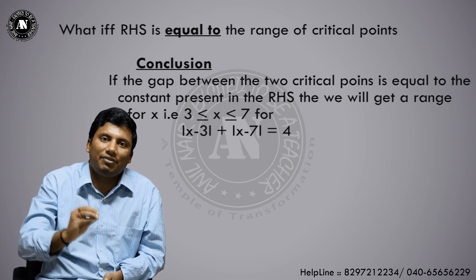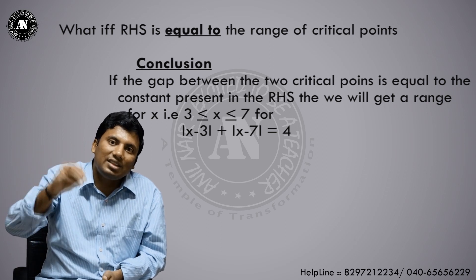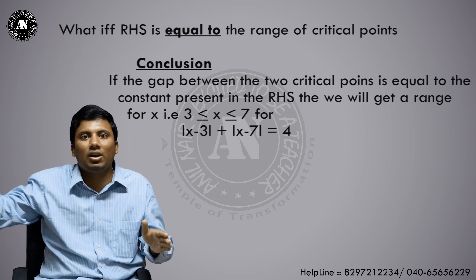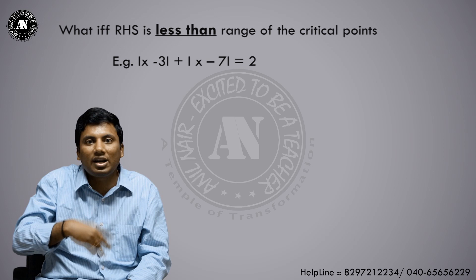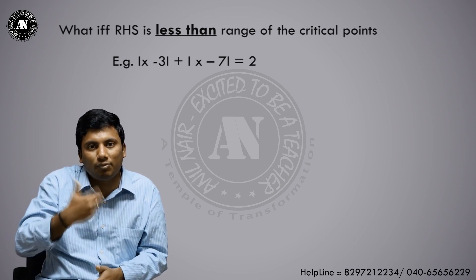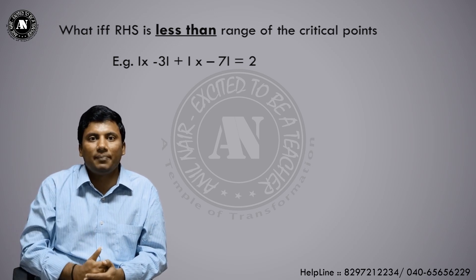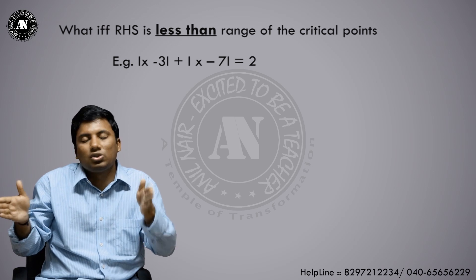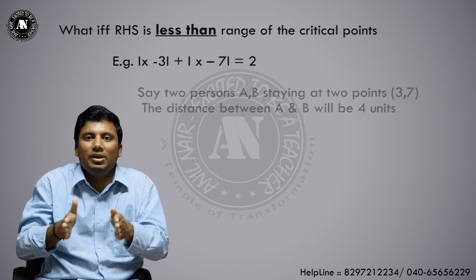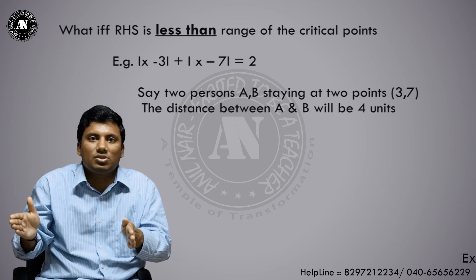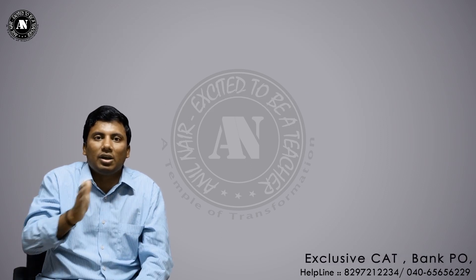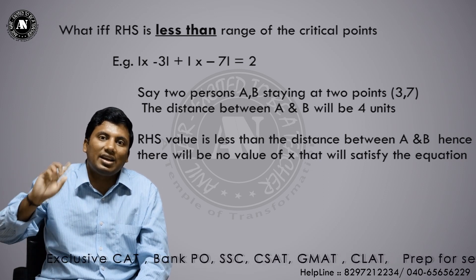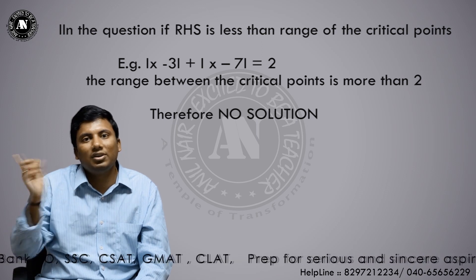Case 3: what if the right-hand side value is less than the distance between the critical points? For example, mod(x - 3) + mod(x - 7) = 2. In such a case you will get no value for x. A and B are 4 units apart, but the right-hand side says 2 — they cannot meet, because the distance between the two critical points is greater than the right-hand side value. Hence, no solution for x.